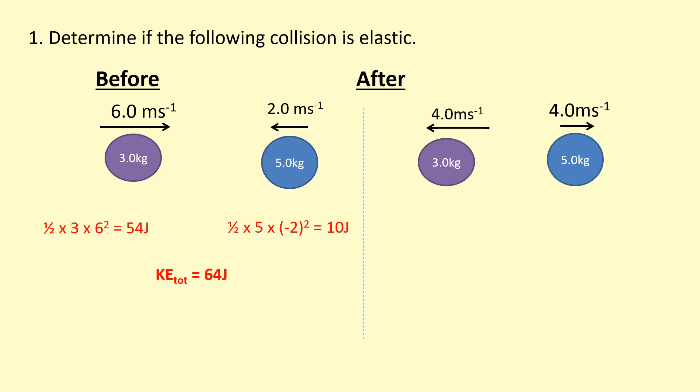So the total is 64 joules. If I do the same on the other side and I add them together, I get 64 joules. So we know this collision is elastic because the kinetic energy has been conserved. Now if this number had been smaller, let's say 50 joules, it doesn't mean that the total energy hasn't been conserved—just the kinetic energy hasn't been conserved.